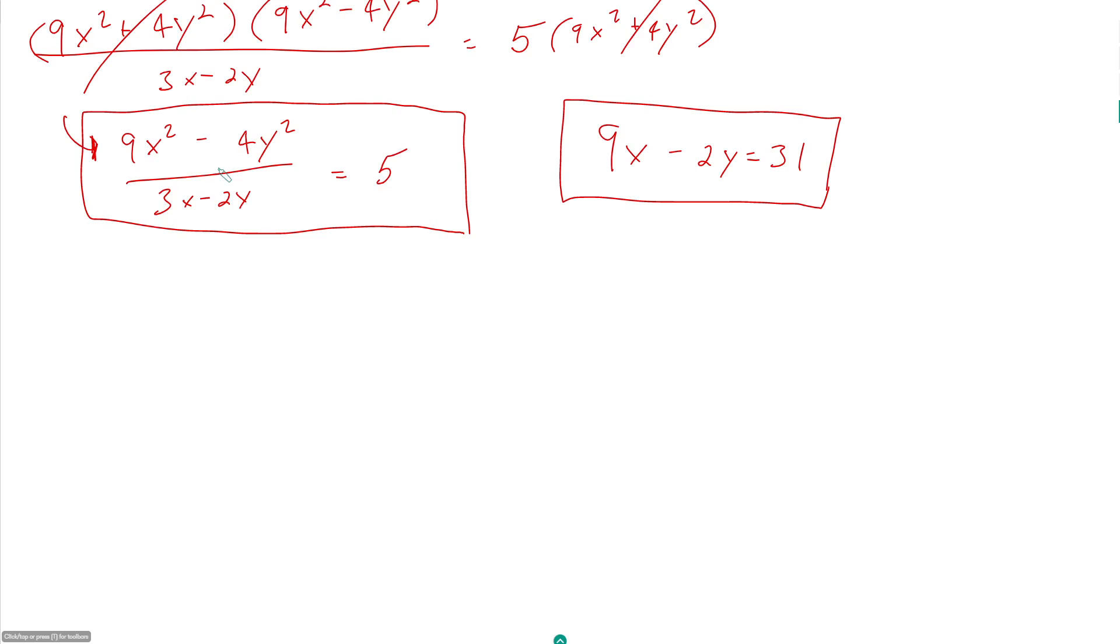This is usually going to be the easier difference of squares to recognize. So don't pat yourself on the back when you factor it for the first time, necessarily, but then miss when you have a second difference of squares. So if I were to put this difference of squares in its factor form now, it would be 3x plus 2y times 3x minus 2y all over 3x minus 2y is equal to 5.